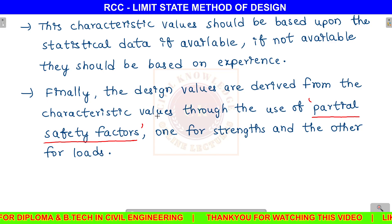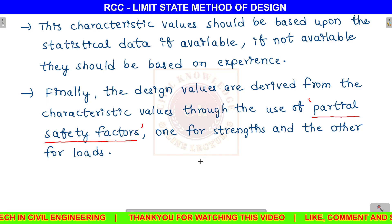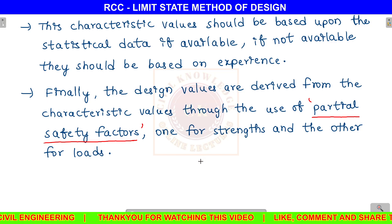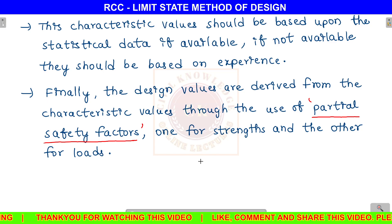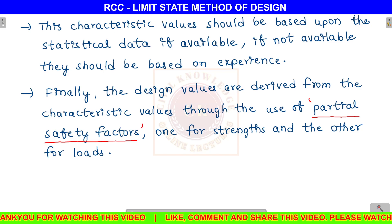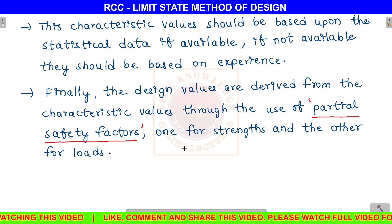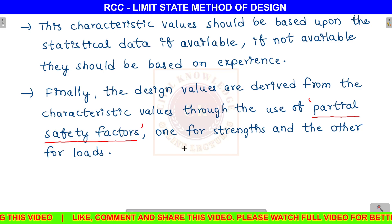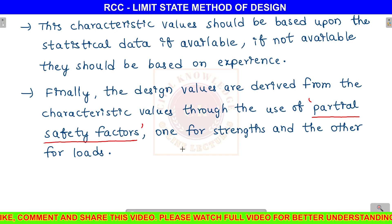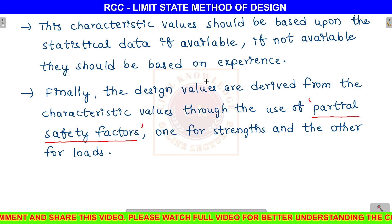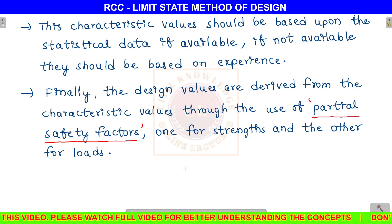Similarly for steel, 95% of the test specimens will pass — meaning they will achieve or exceed the characteristic strength value. So if you use M20 grade concrete, the characteristic strength is 20 N/mm², and 95% of the specimens must satisfy this value.